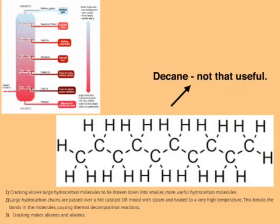The big, long molecules condense at the bottom and the smaller molecules condense at the top. Each of these fuels is made up of hydrocarbons — a molecule that contains hydrogen and carbon atoms. An example is decane, which has 10 carbon atoms along the chain. Long-chained hydrocarbons like decane are not that useful, so in industry people break them down into something far more useful.